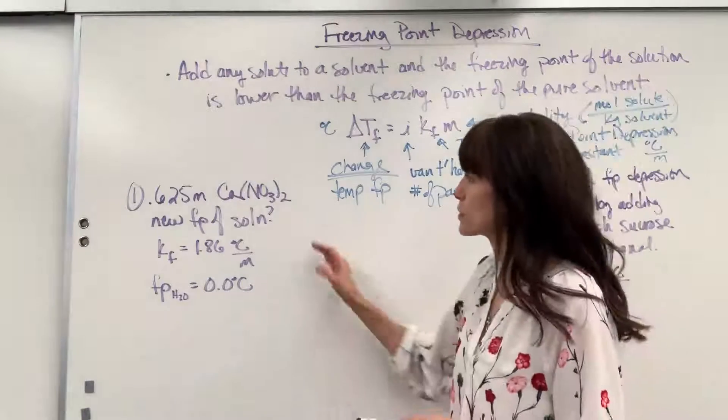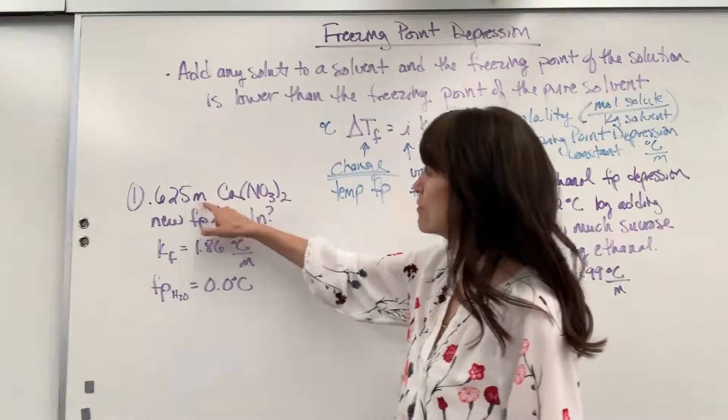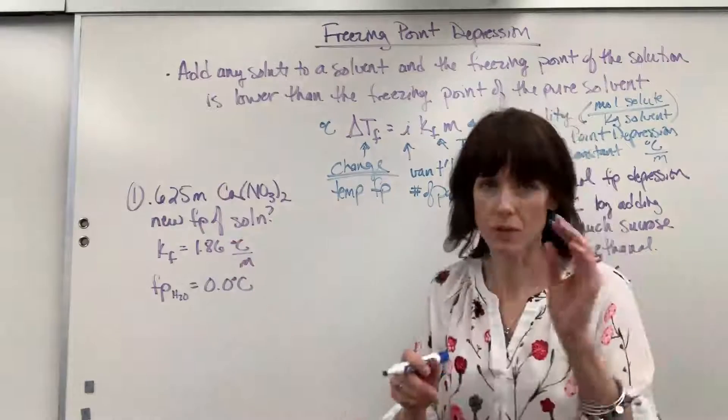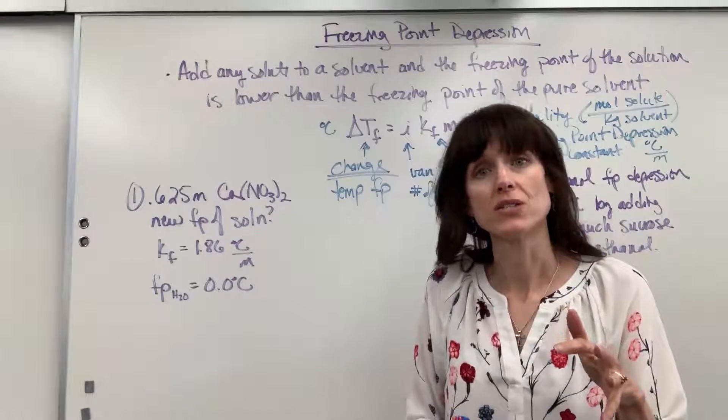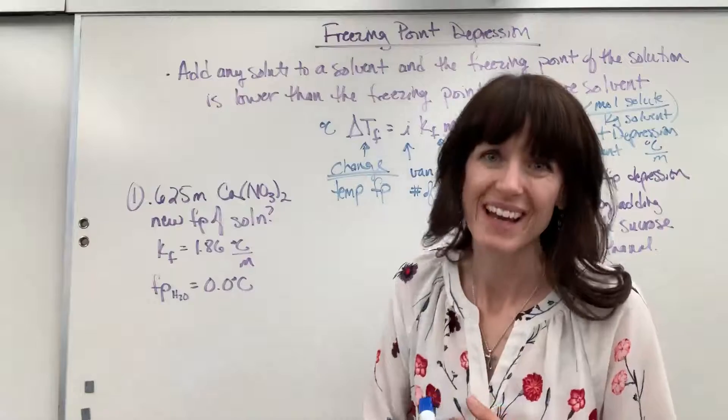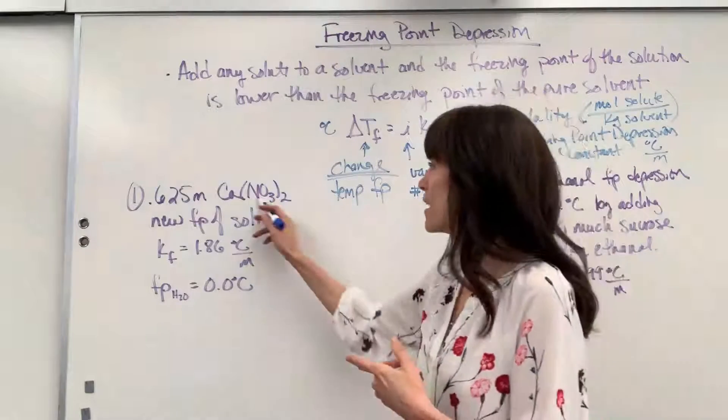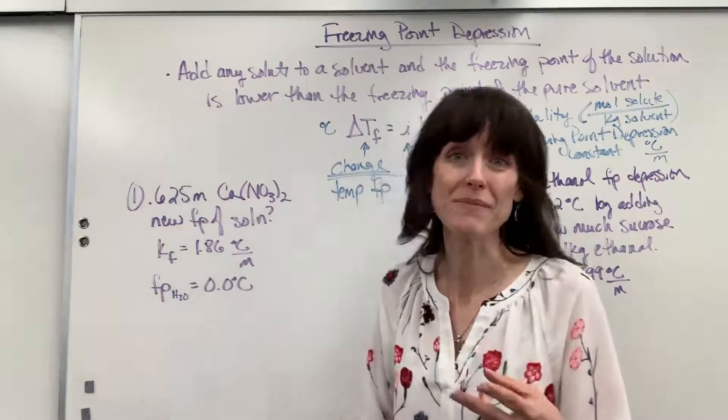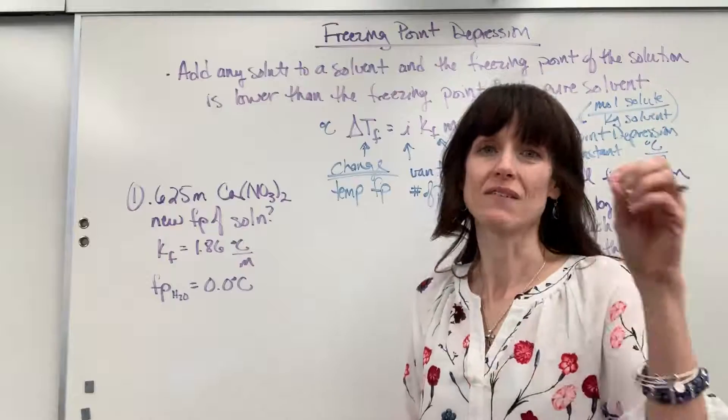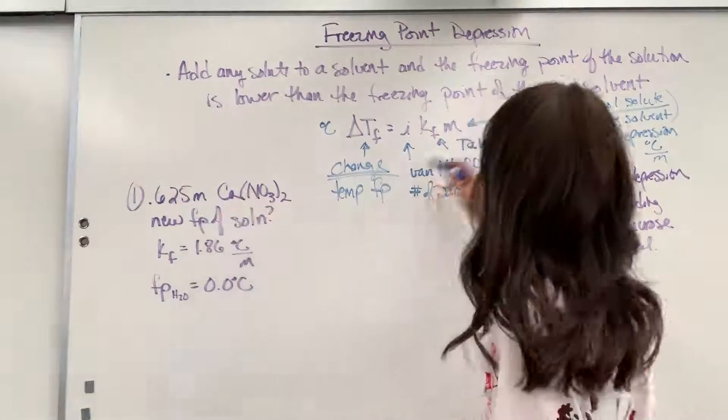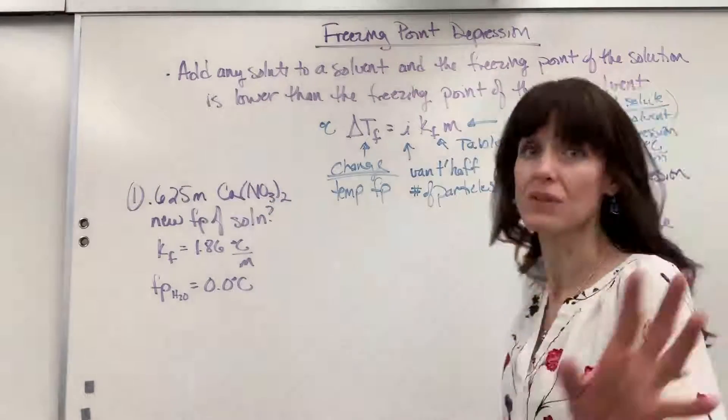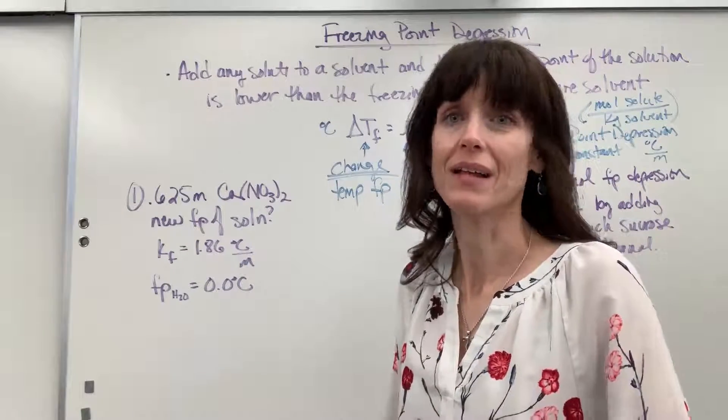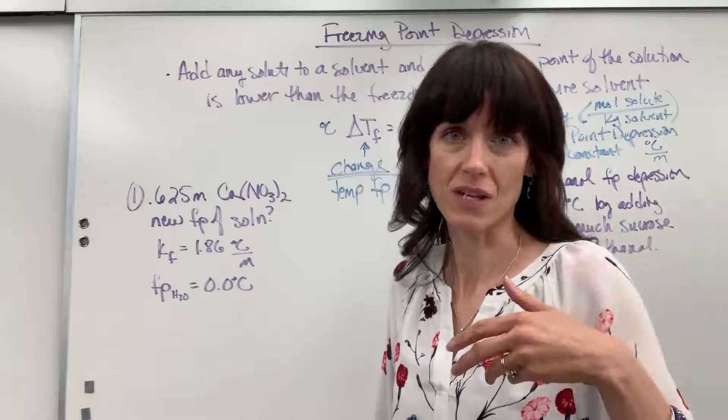So here is our first question. We have a 0.625 molal calcium nitrate. I want to pause there. There may be some questions that they'll give you the moles of the solute or they'll give you the grams and then they'll give you the mass of the solvent. They expect you to find molality. So if you need to watch that video on how to find molality, it's just mole solute divided by kilograms of solvent.